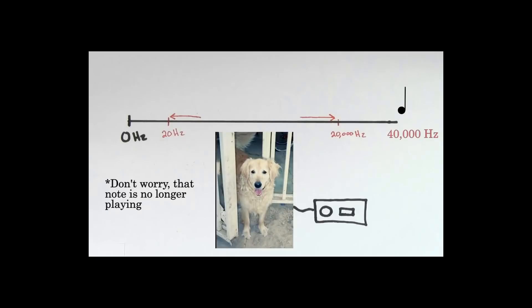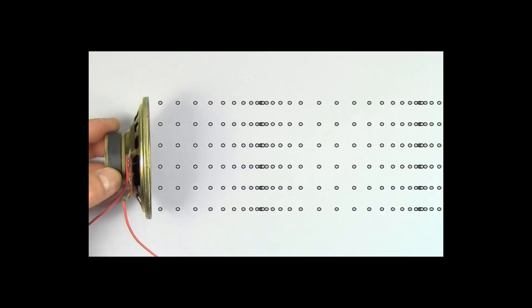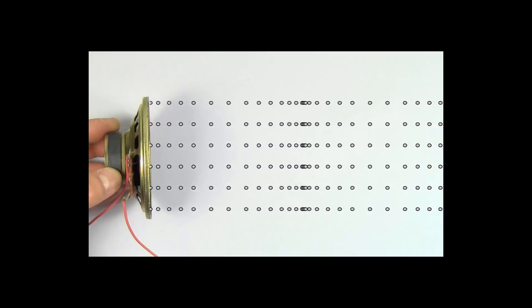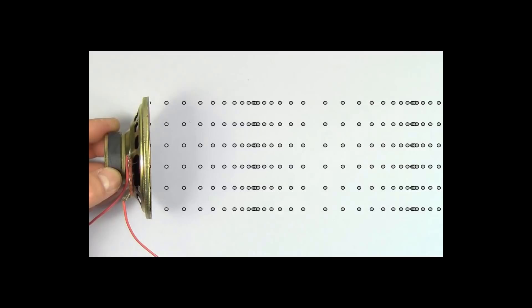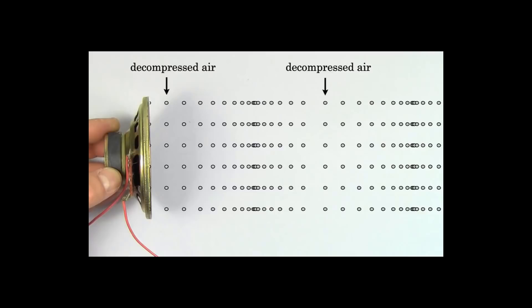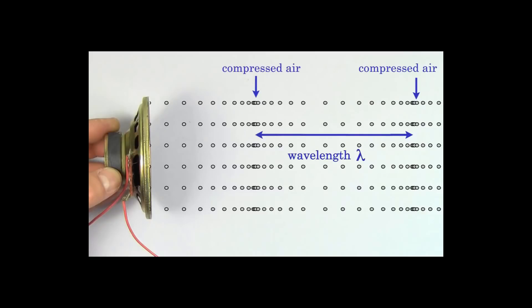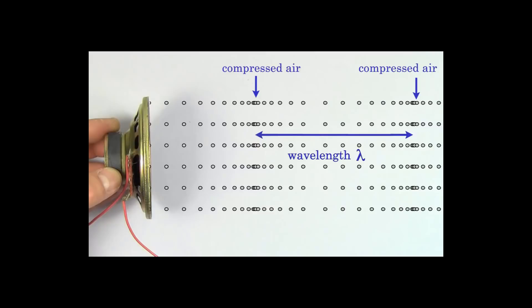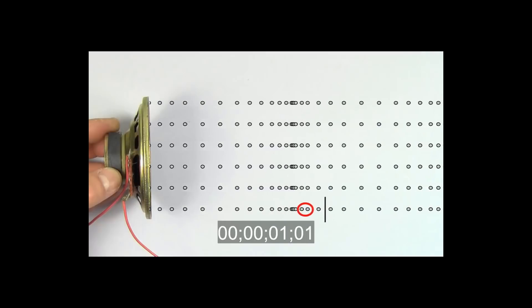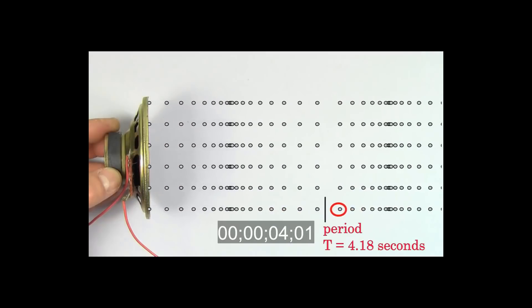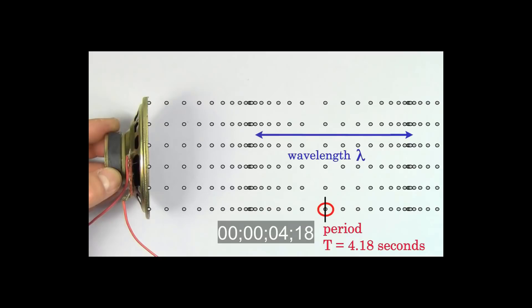Another key idea in sound waves is the wavelength of the sound wave. When sound is traveling through a region of air, the air molecules will be compressed close together in some regions and spread far apart in other regions. If you find the distance between two compressed regions, that would be the wavelength of that sound wave. Since the wavelength is a distance, we measure it in meters. Be careful — people get wavelength and period mixed up all the time. The period is the time it takes for an air molecule to oscillate back and forth one time; the wavelength is the distance between two compressed regions of air.